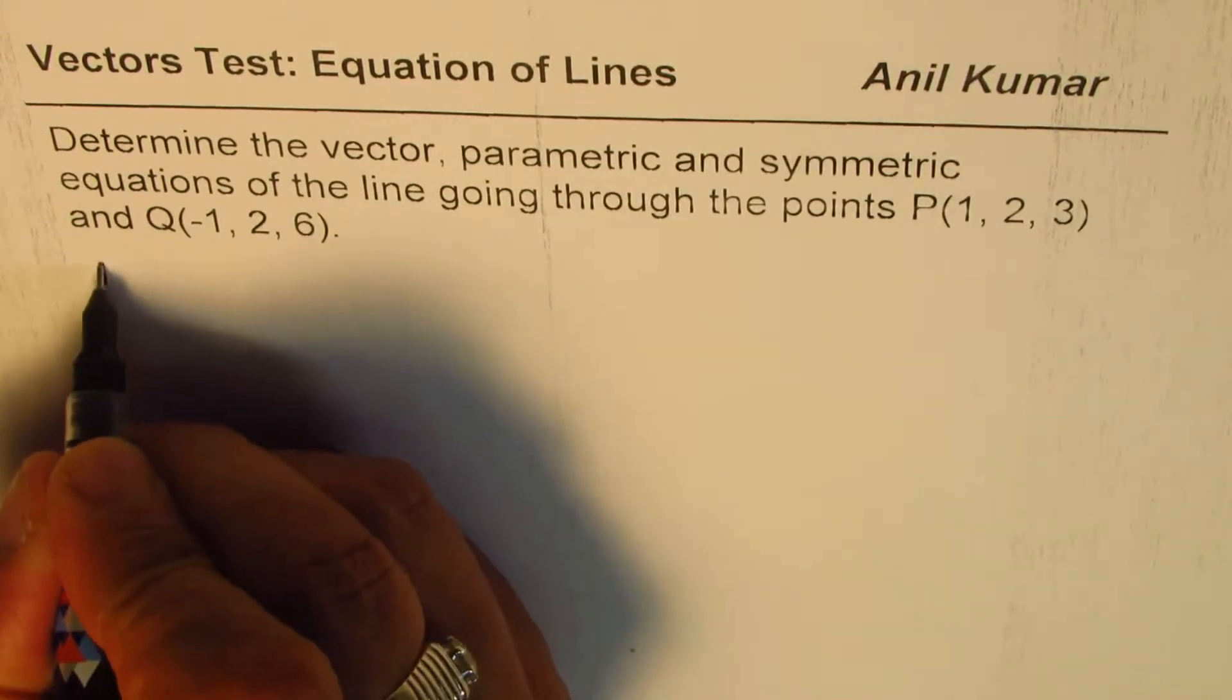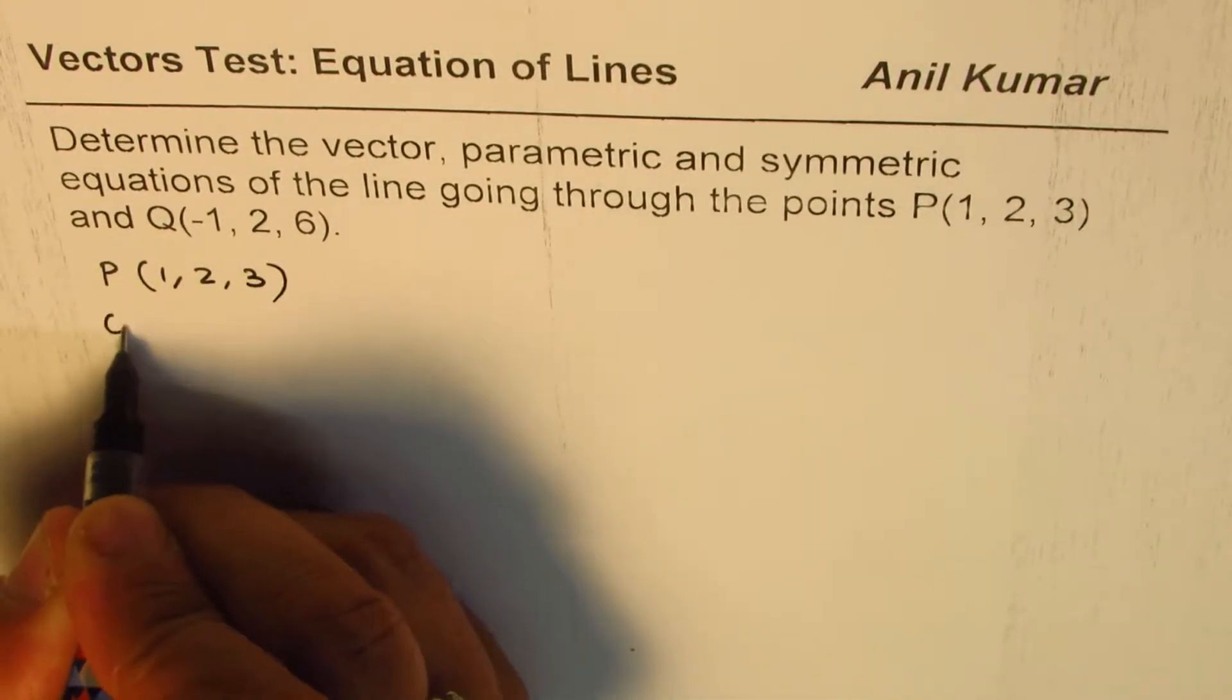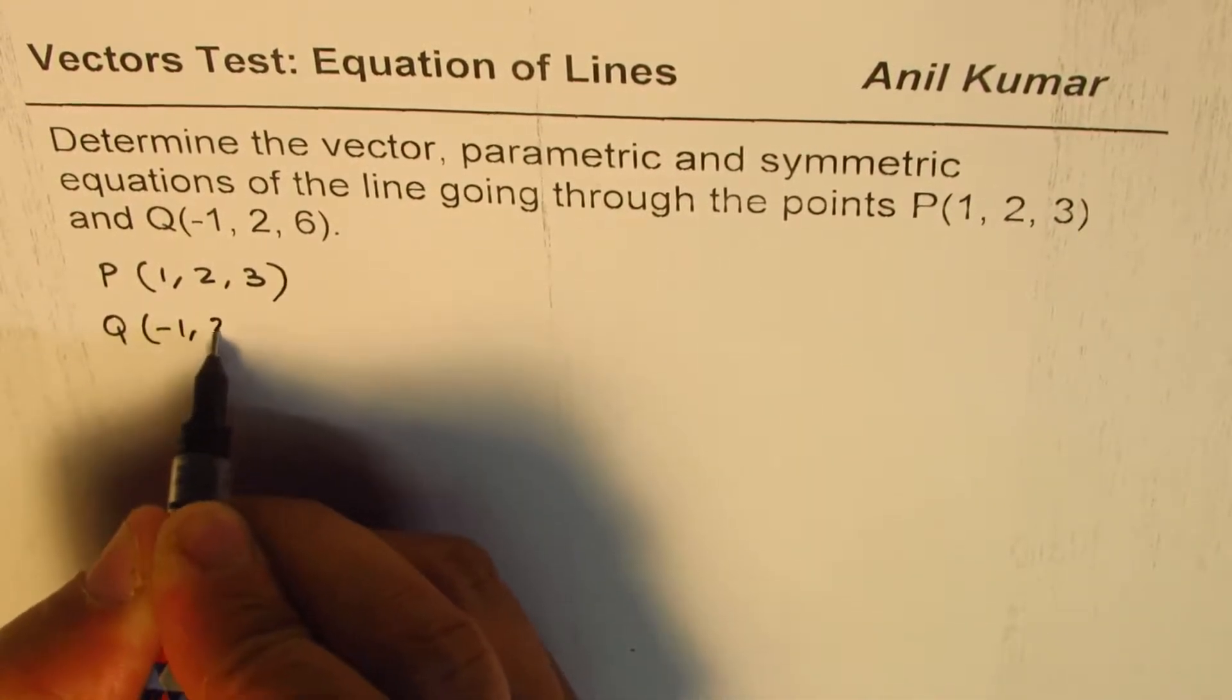Well, we are given the point P, which is (1, 2, 3), Q is (-1, 2, 6).